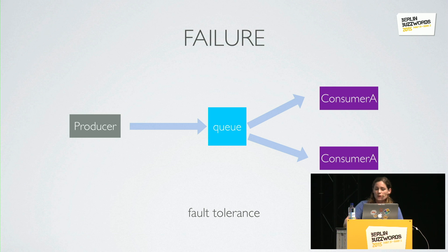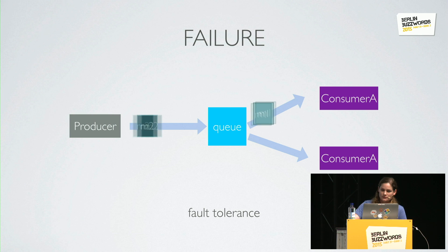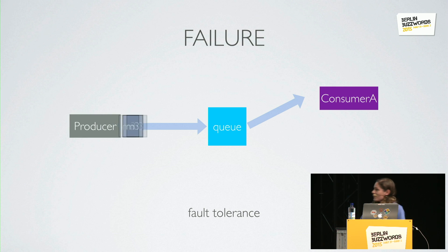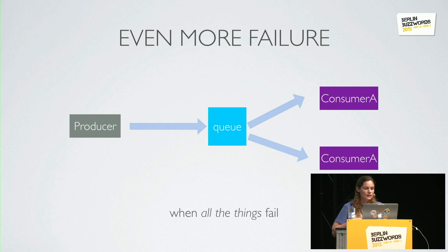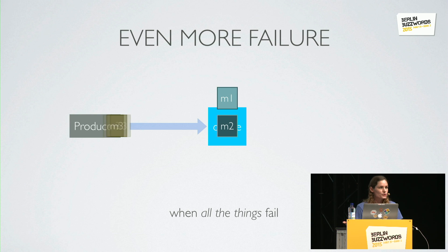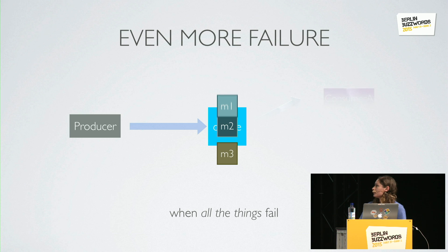Let's see what happens when one of our consumers fails. When the next message comes through, the consumers that are still available will continue to be able to handle the throughput. And lastly, when all the consumers die, our queue will hang on to those messages until such a time when new consumers can come back online to handle them.